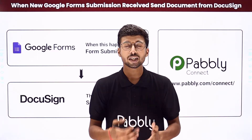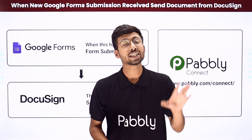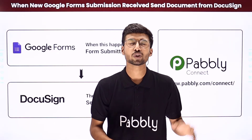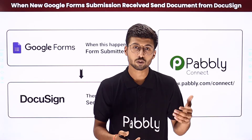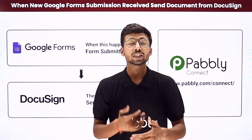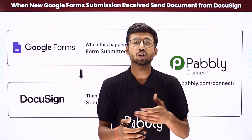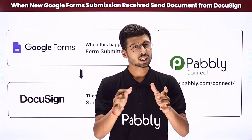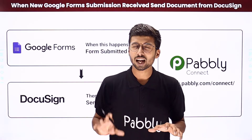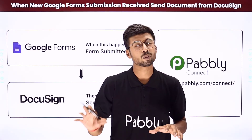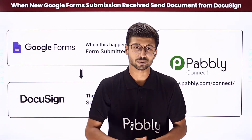Suppose you have created a form using Google Forms and you are getting details from your leads, customers, students, or any kind of users. Now you want that whenever a user submits the form, you want to send a document from DocuSign to that very same user for authentication or signature purposes. The manual process of getting the form submission data and manually sending the document from DocuSign can be very repetitive and time-consuming.